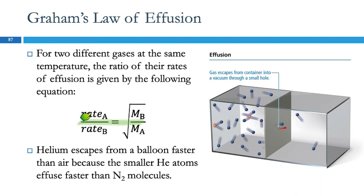Because if rate A is large compared to B, that means that the mass of A is small compared to B. So that's why it's inverted.